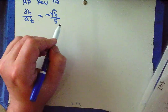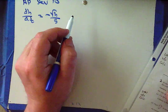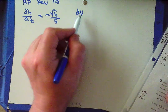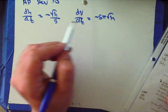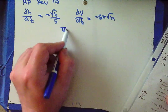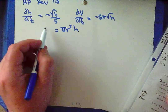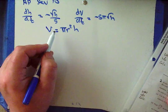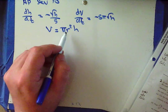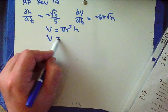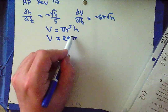A coffee pot in the shape of a cylinder — show that dh/dt equals negative root h over 5. We're told that the volume of coffee dV/dt is changing at negative 5π√h, and we know πr²h is the volume of this coffee pot. We also know that the radius is constant here, and I plug in constants before I take derivatives, so we get 25πh.